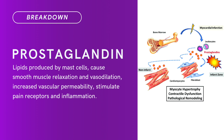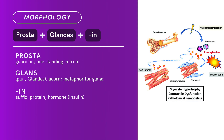Compound term: prostaglandin. Brief definition: lipids produced by mast cells. Cause smooth muscle relaxation and vasodilation. Increase vascular permeability. Stimulate pain receptors and inflammation. Term morphology — compound of prostaglandis plus in. Prosta means guardian or standing in front. Glans means acorn, a metaphor for gland. In is a suffix that denotes protein or hormone, as in insulin. There you have it — prostaglandin.